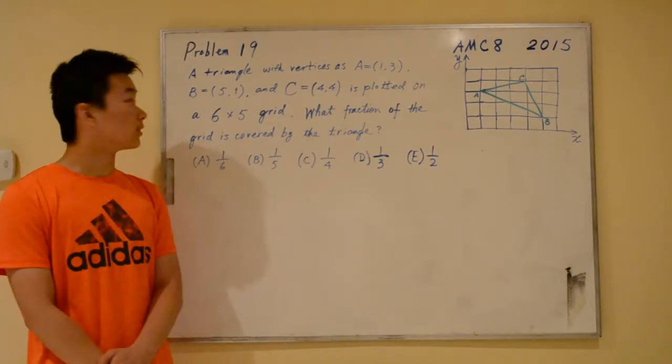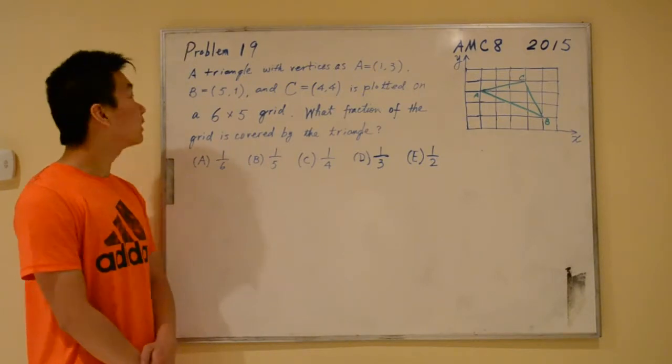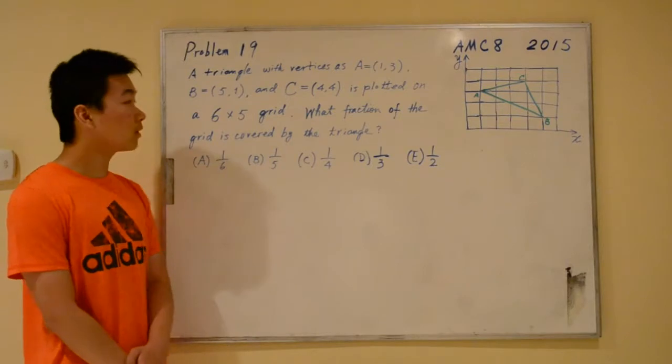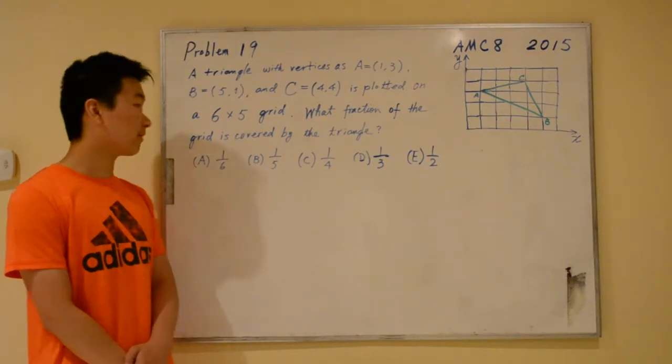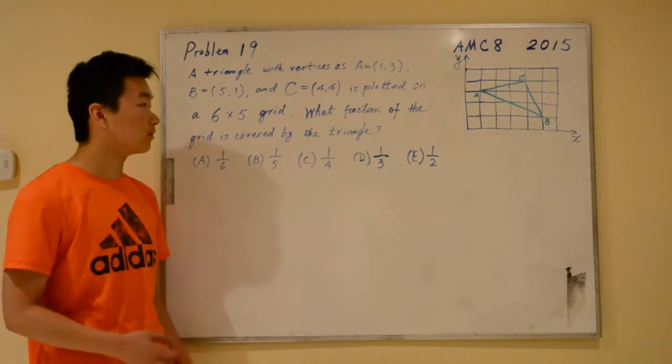The problem reads: a triangle with vertices A at (1,3), B at (5,1), and C at (4,4) is plotted on a 6 by 5 grid. What fraction of the grid is covered by the triangle?